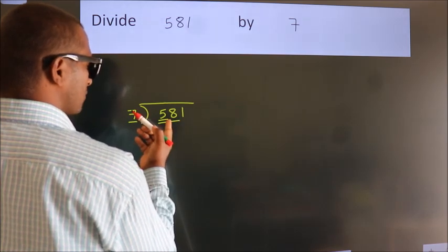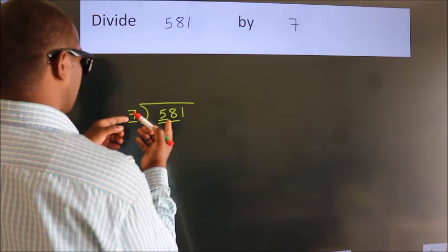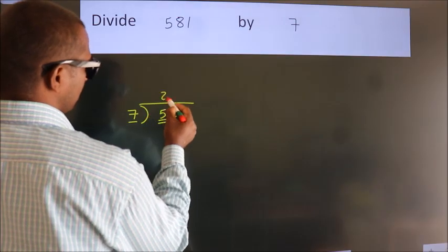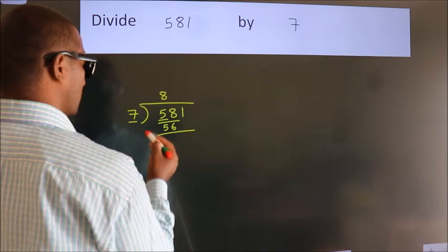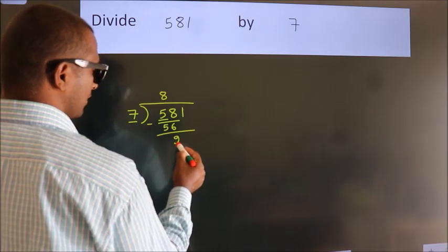A number close to 58 in 7 table is 7 times 8, 56. Now we should subtract. We get 2.